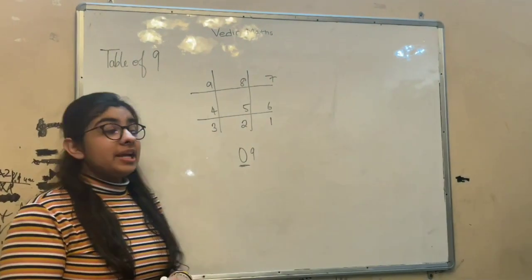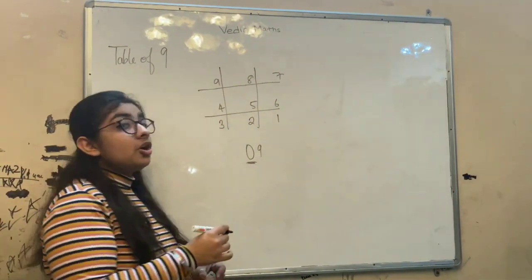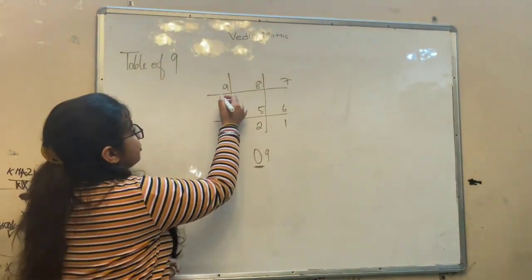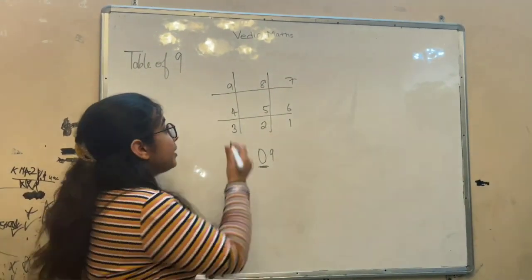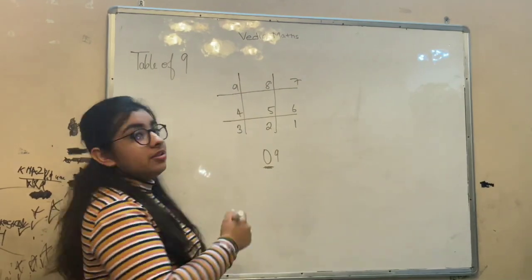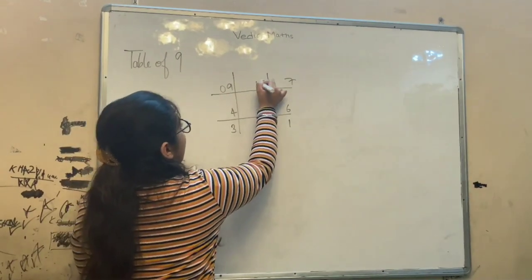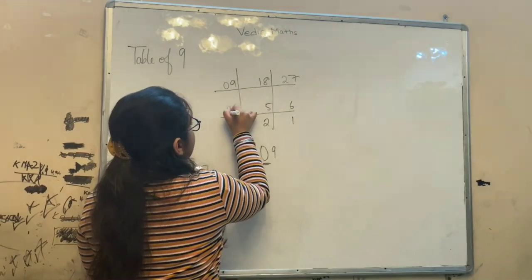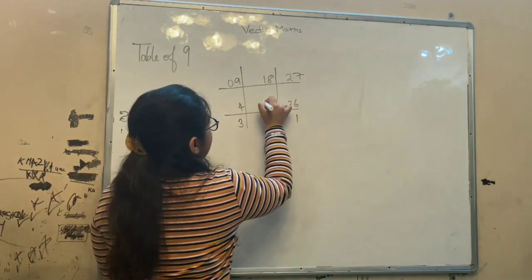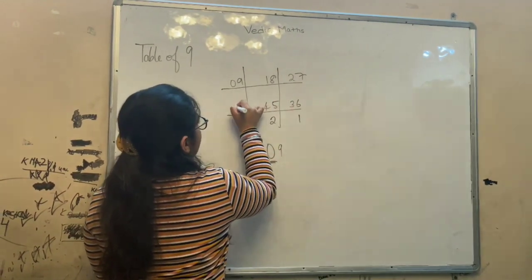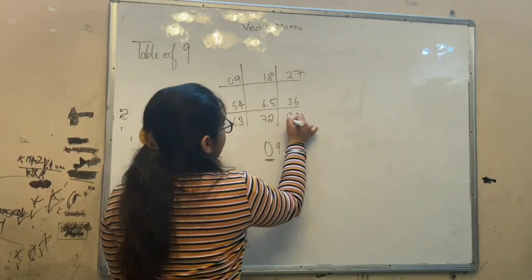Now, because there is no value before 9, the value is 0 — we do not skip anything and we start writing from 0. Make sure the number you write this time is placed before the number you've already written. So: 0, 1, 2, 3, 4, 5, 6, 7, 8. And that is the table of 9 for us.